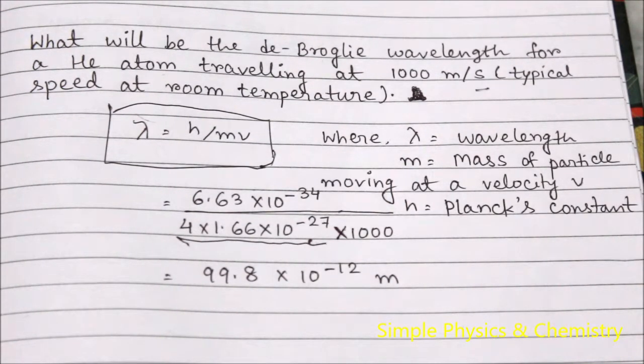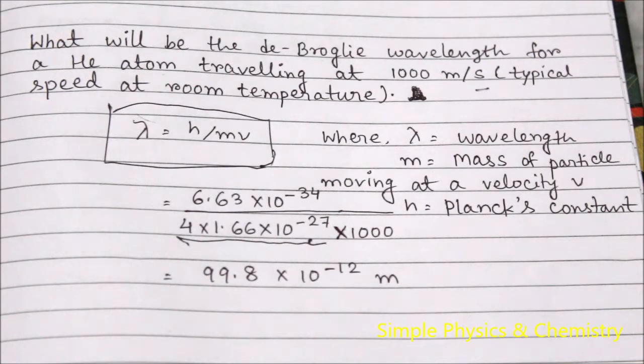Putting all the values together, we get 99.8 times 10 to the power minus 12 meters. This is the De Broglie wavelength of a helium atom moving at a speed of 1000 meters per second.